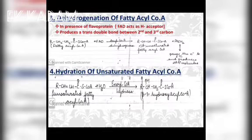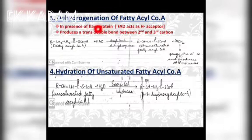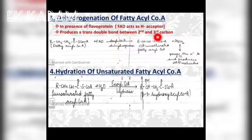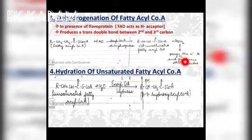Now the fatty acyl coenzyme A is in the mitochondrial matrix. Step three is dehydrogenation of fatty acyl coenzyme A, which occurs in the presence of flavoproteins where FAD acts as a proton receptor. This produces a trans double bond between the second and third carbons, yielding alpha-beta unsaturated fatty acyl coenzyme A. The FADH2 produced passes electrons to the electron transport chain, generating two ATP molecules.